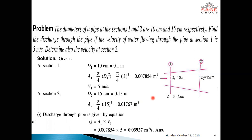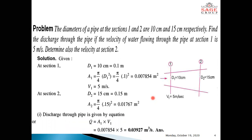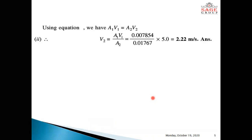We have calculated the discharge. Second, we calculate the velocity at section 2. Using the continuity equation, A1 V1 equals A2 V2. So velocity at section 2, V2 equals A1 V1 divided by A2. Putting the values of A1, V1, and A2, we get V2 equal to 2.22 m per second.